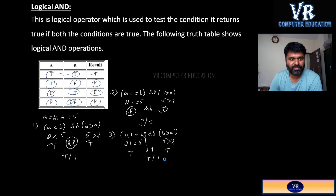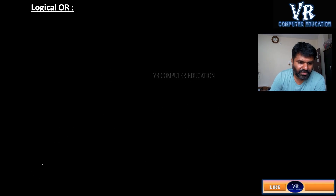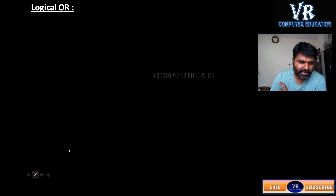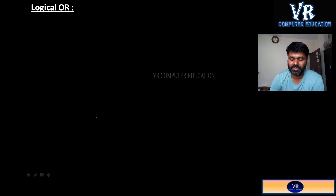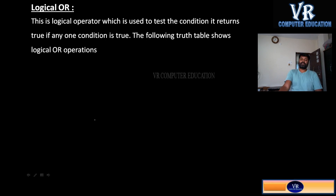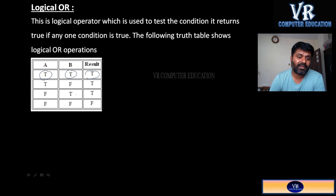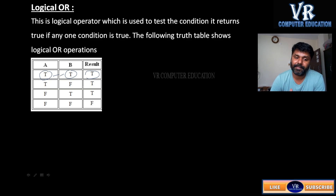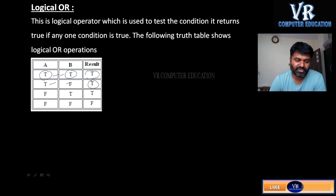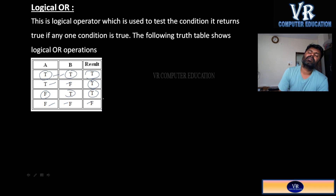Next we move to logical OR. In logical AND, both conditions should be true for the result to be true. But in logical OR, only one condition needs to be true for the result to be true. See the truth table: true OR true gives true; true OR false gives true; false OR true gives true — because any one should be true. Both false gives false only.